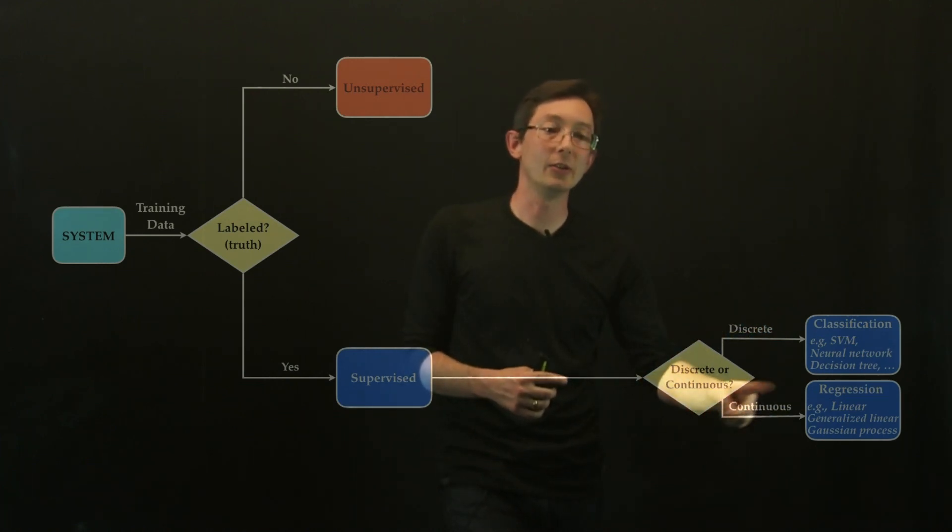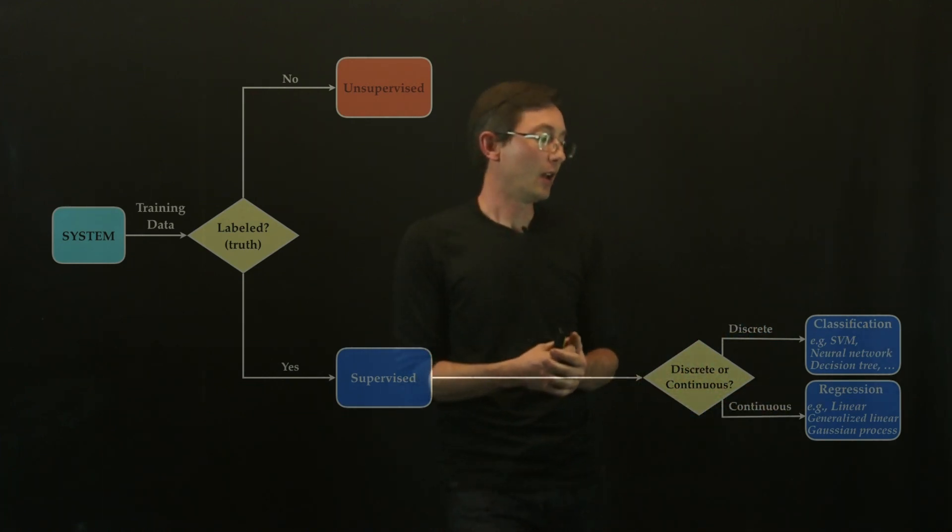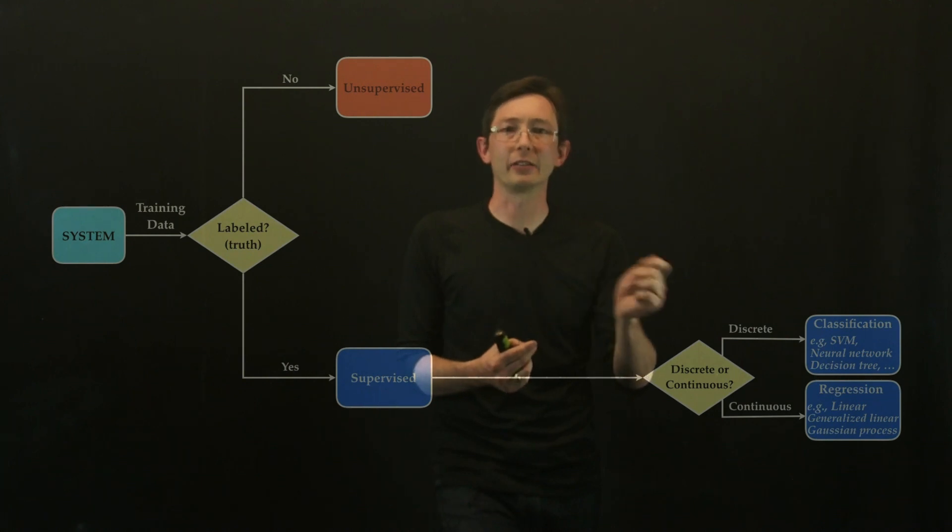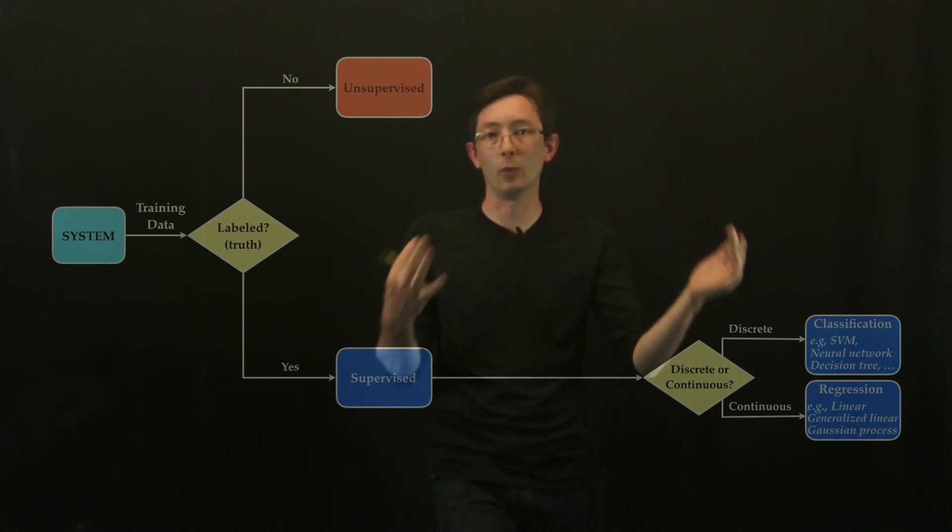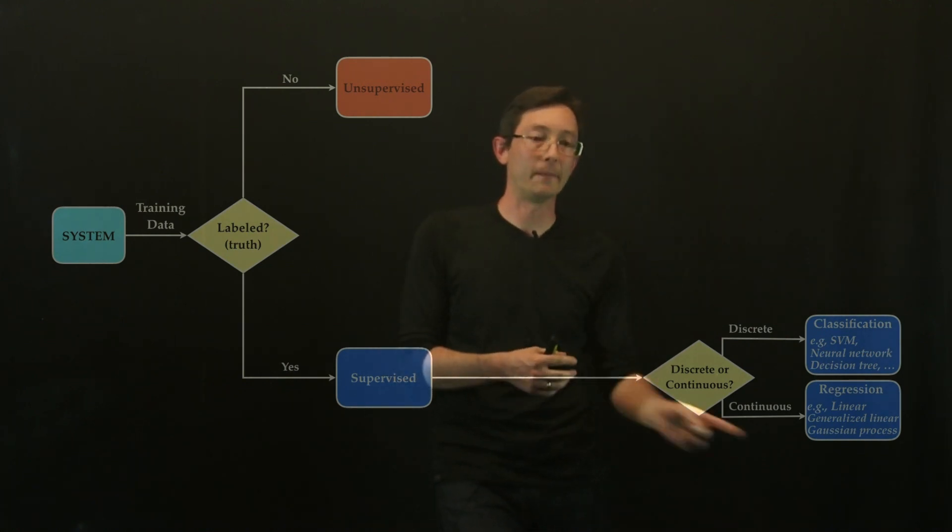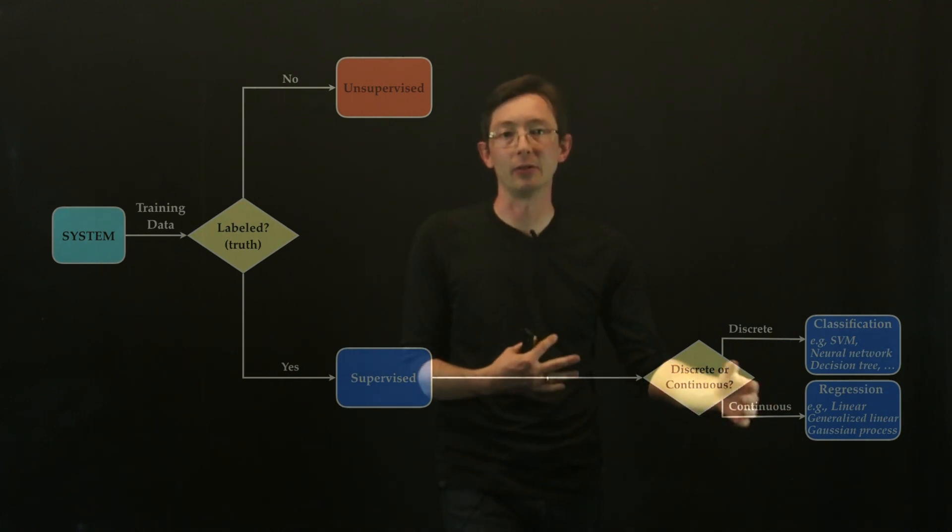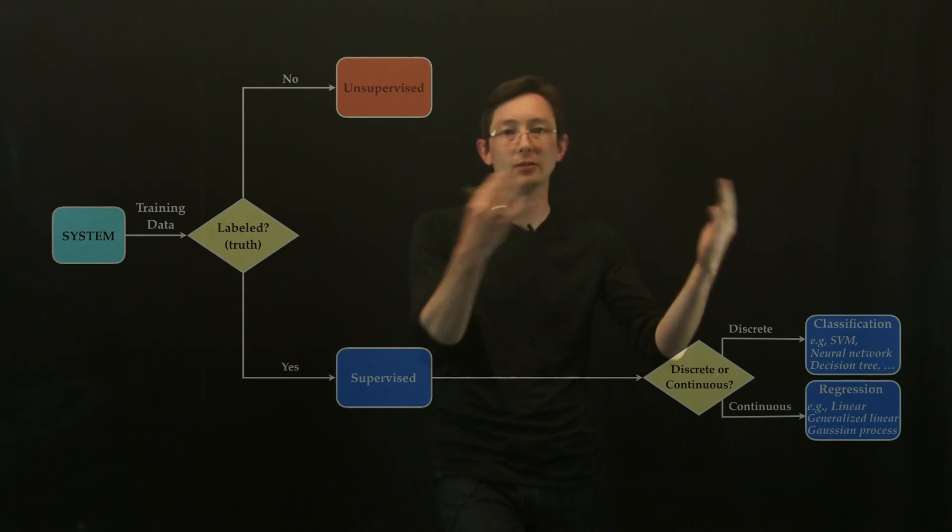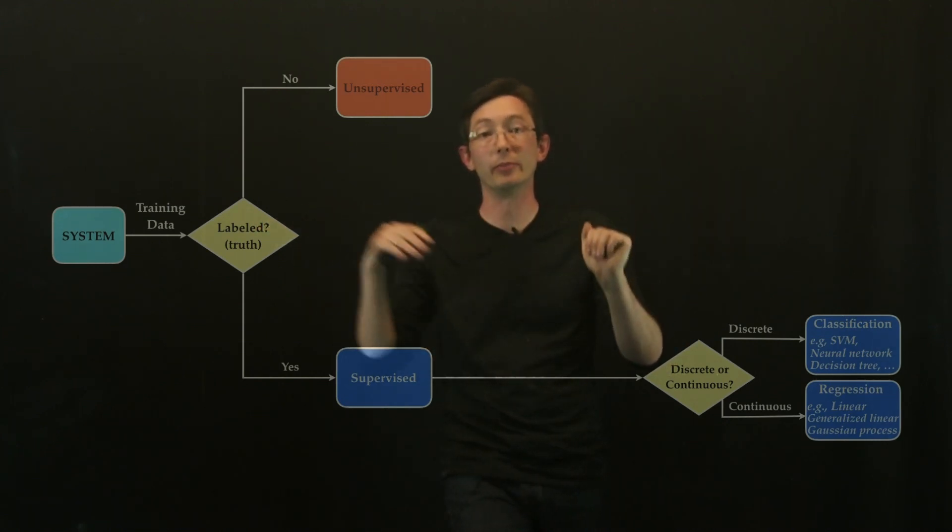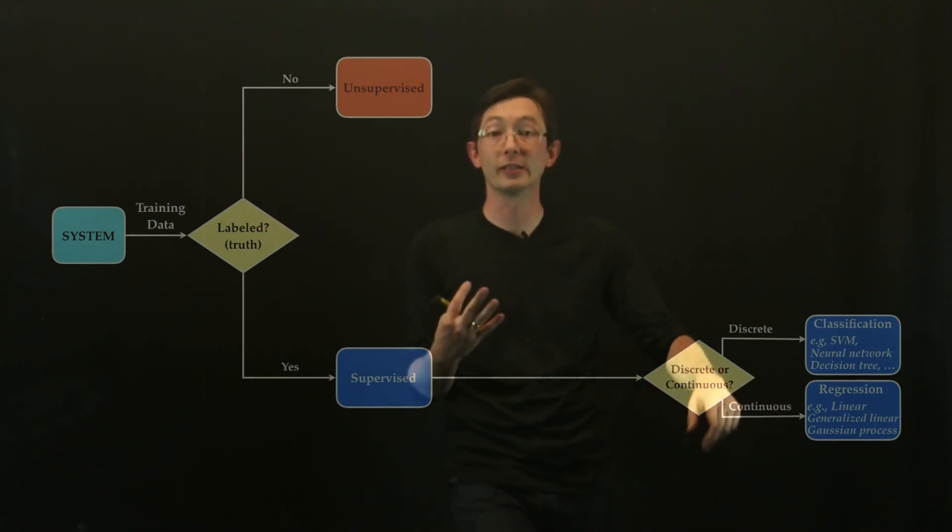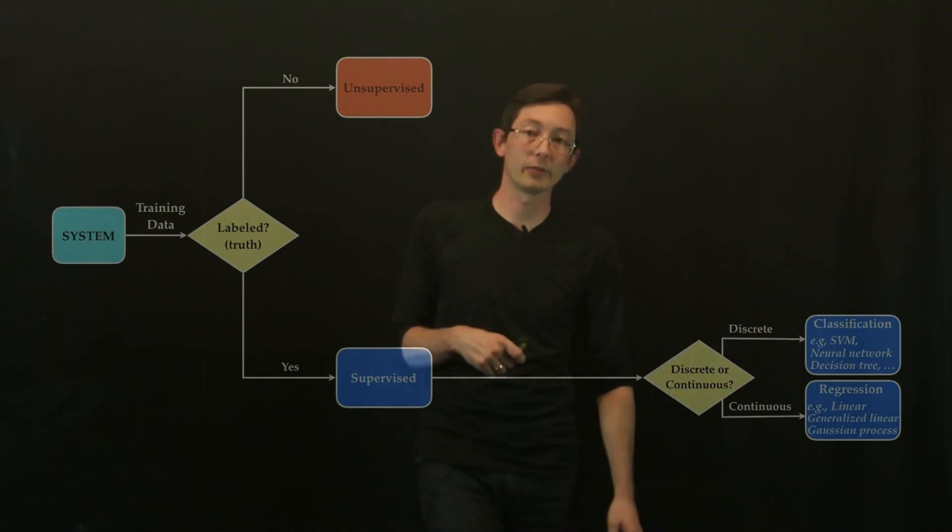Whereas continuous labels would be something like a scalar measurement of the force on a wing or something like that. So a continuous variable, maybe it's earning potential given some input factors. So something that is a continuous variable versus something discrete.